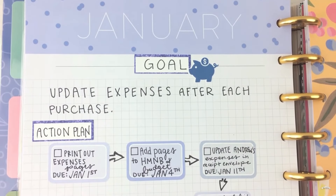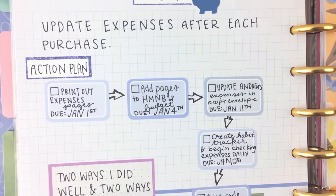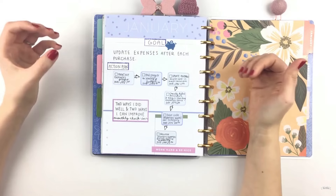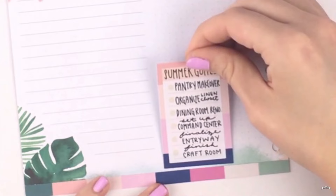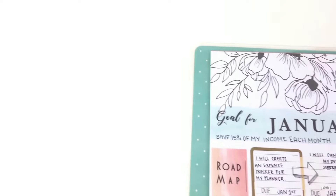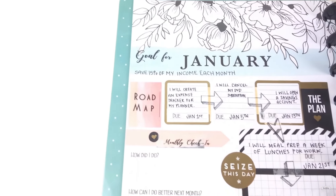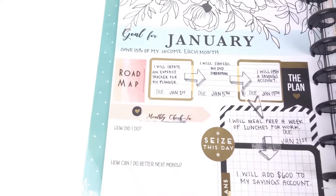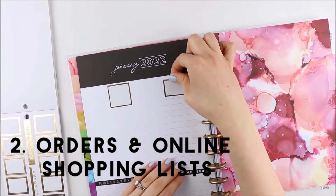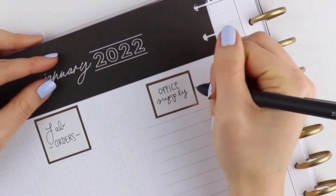The first idea is to use your currently page for writing out goals for the month, but you could also break it down into goals for that quarter of the year. For example, I wrote down my summer goals on my currently page, and on another page I wrote down my goals for the month of January.